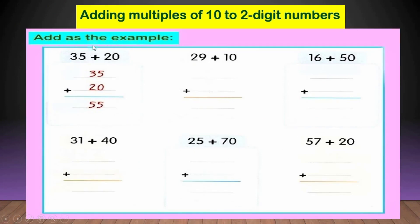كلمة add يعني plus، يعني اجمع. عندنا example محلول وعاوزني احل بقية الـ problems. بيقول لي 35 plus 20. كتبنا الـ 35 first والـ 20 second. we begin with the ones - بابتدي بالـ ones اللي على ايدي اليمين، ايدي اللي باكل بيها. التنسى عالشمال والـ ones عليمين.